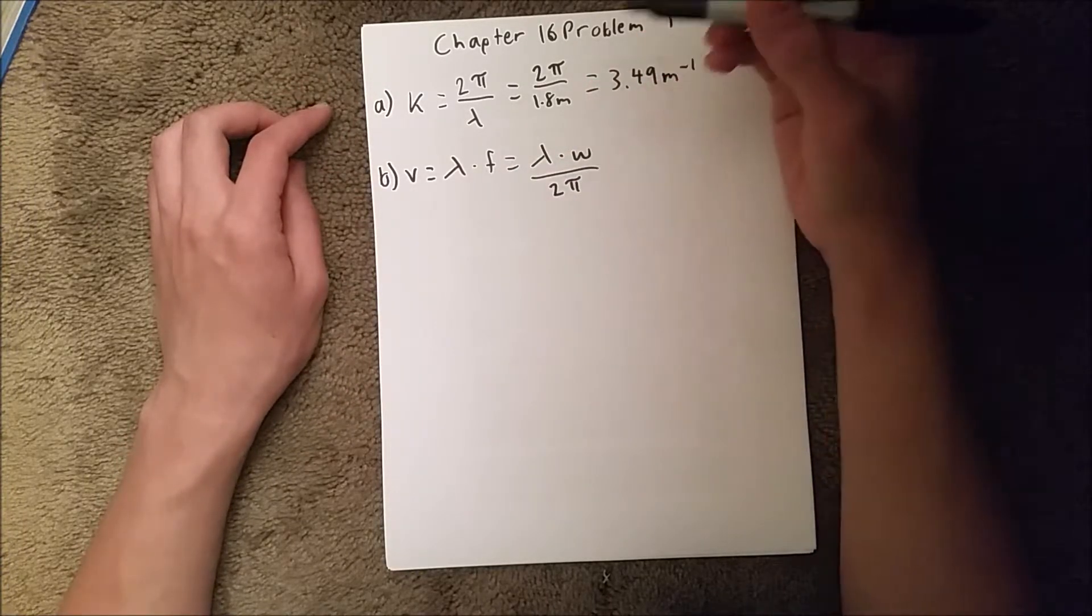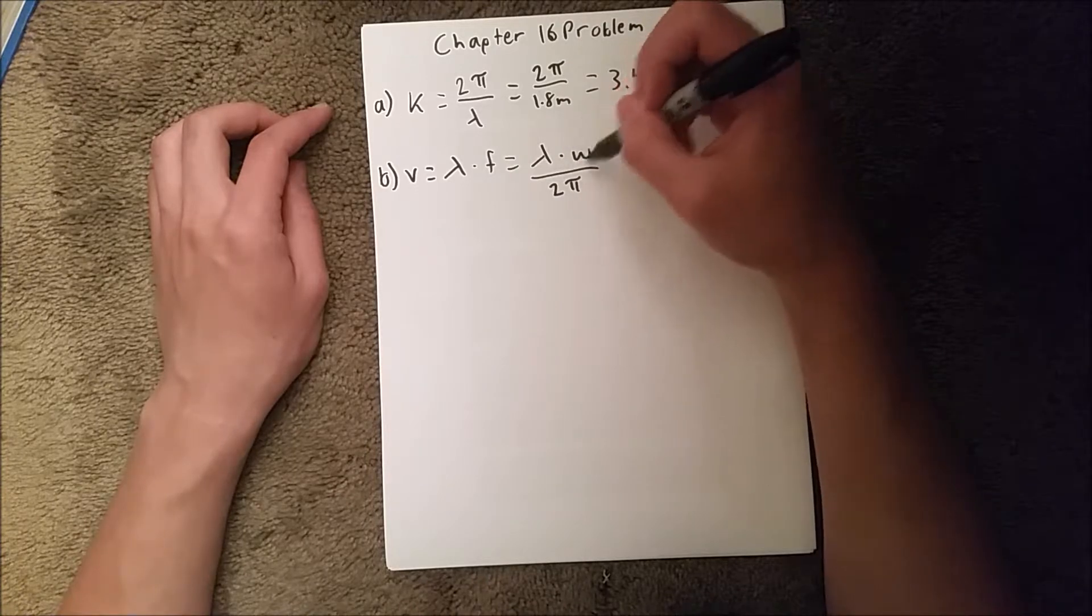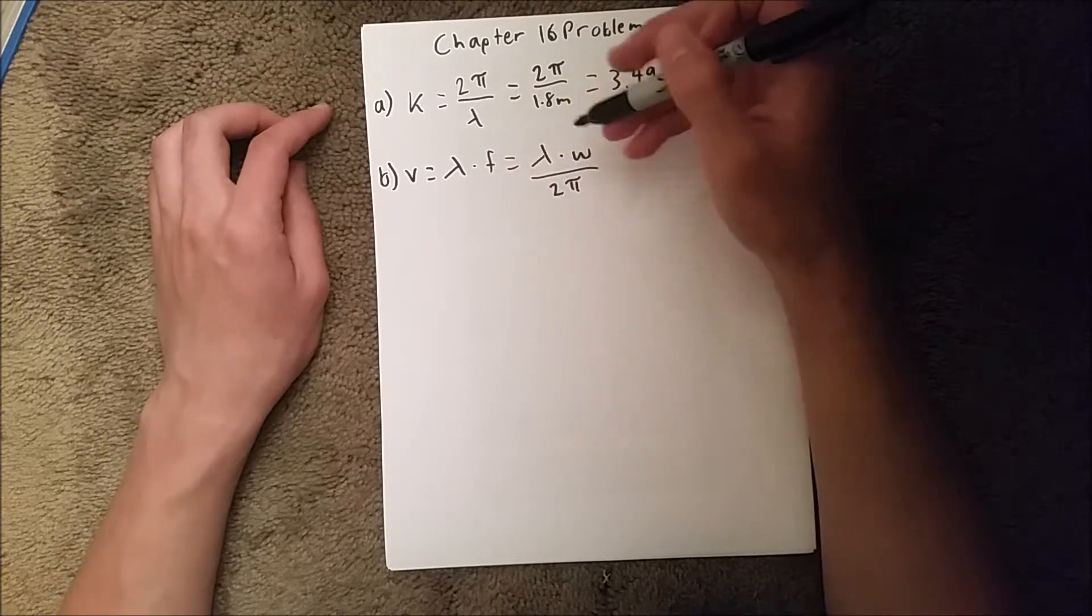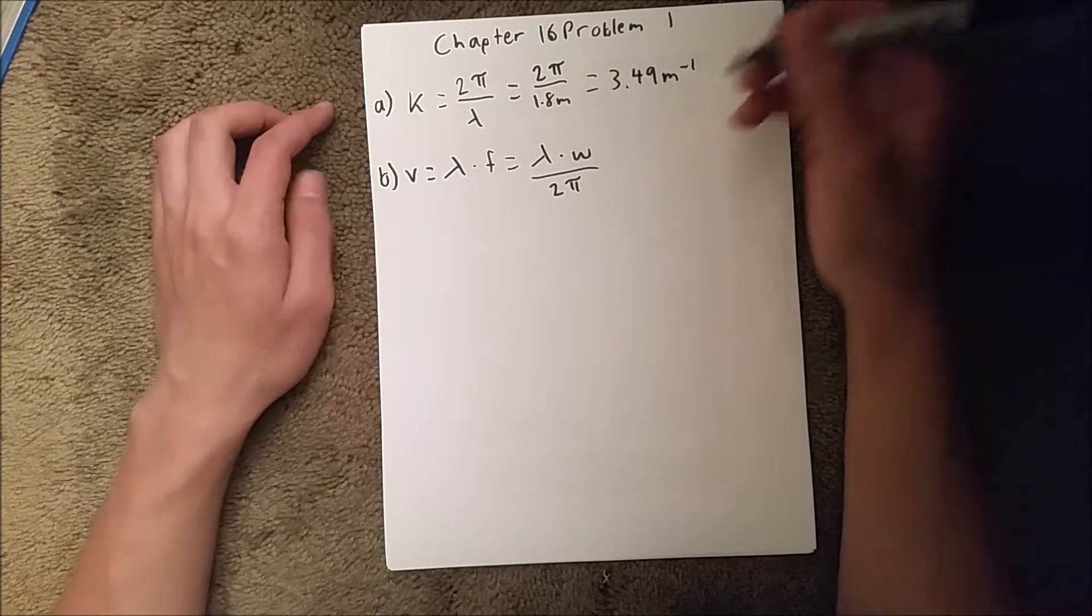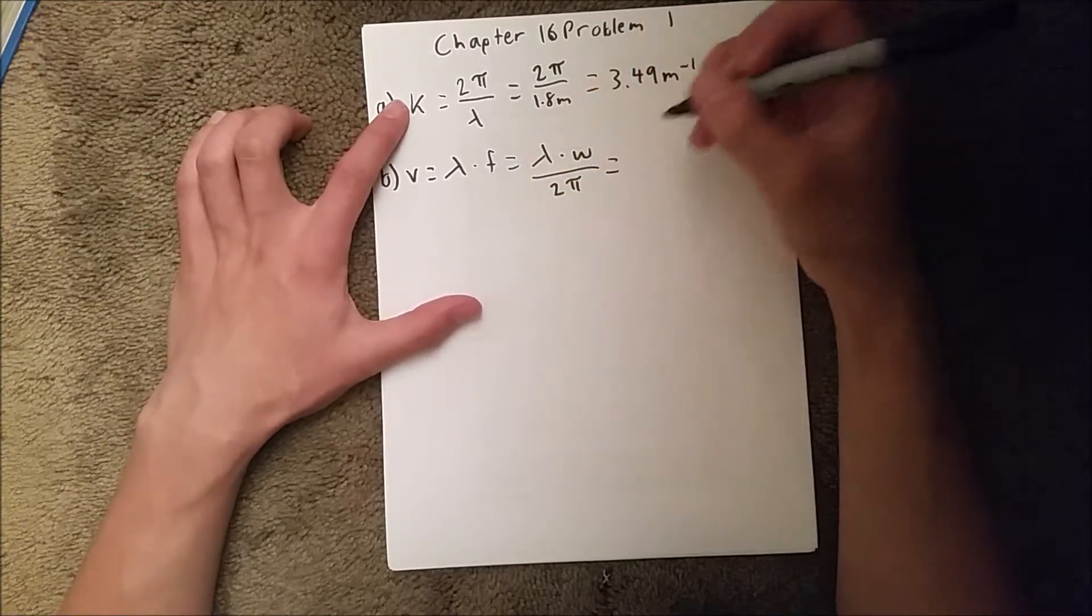And since we are given the angular frequency, this expanded form has your angular frequency, which is omega, so it works out. And we have all these variables now, so we can plug them in.